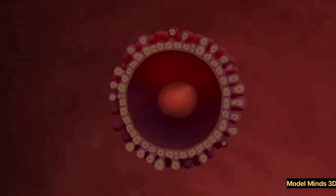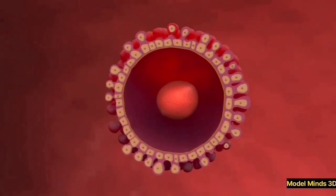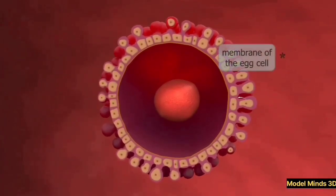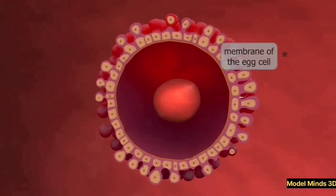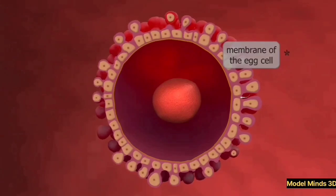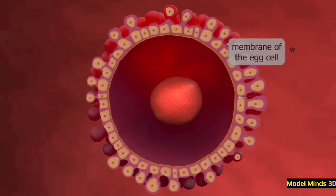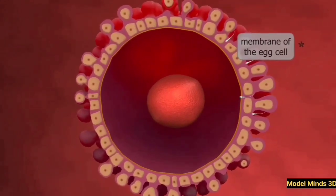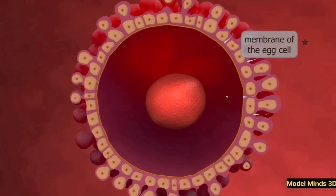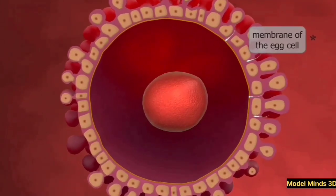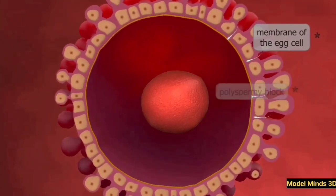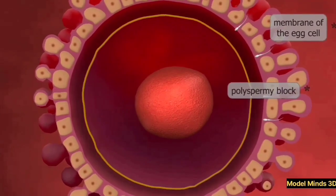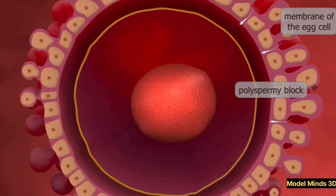Prenatal development starts with fertilization, the moment when a sperm cell meets an egg cell inside the female reproductive system. This process occurs in the fallopian tube, where the sperm penetrates the egg, forming a zygote — a single cell that carries all the genetic material needed to create a human being.